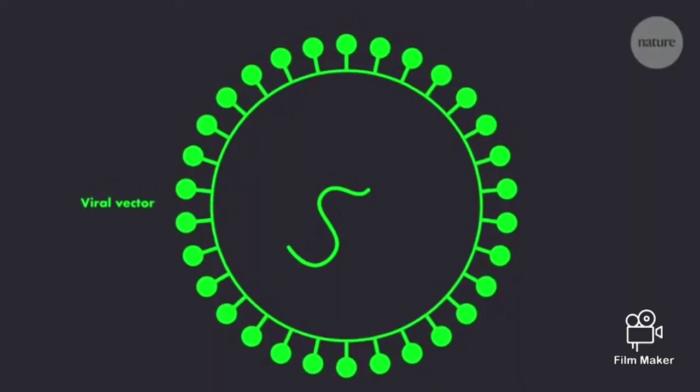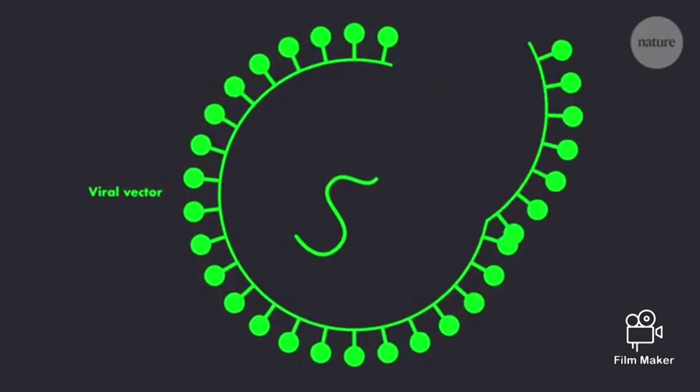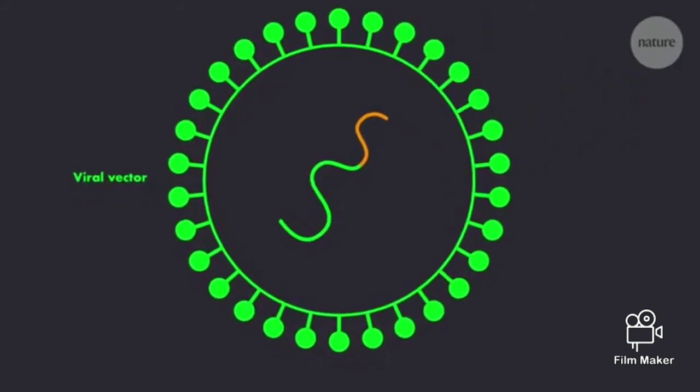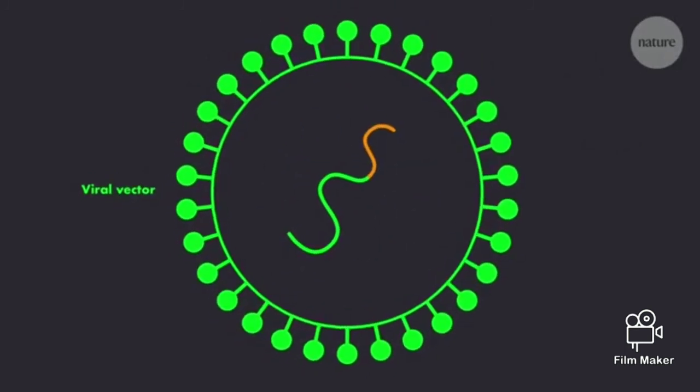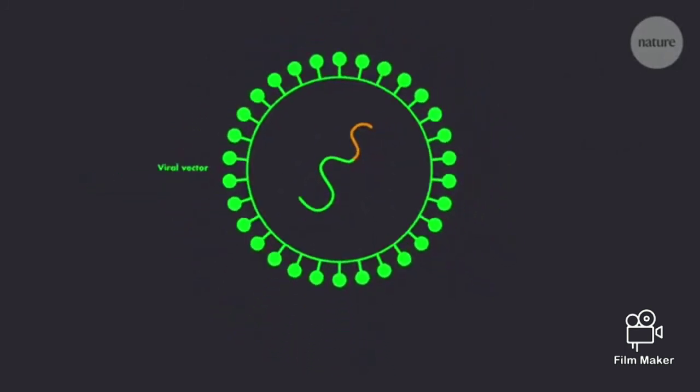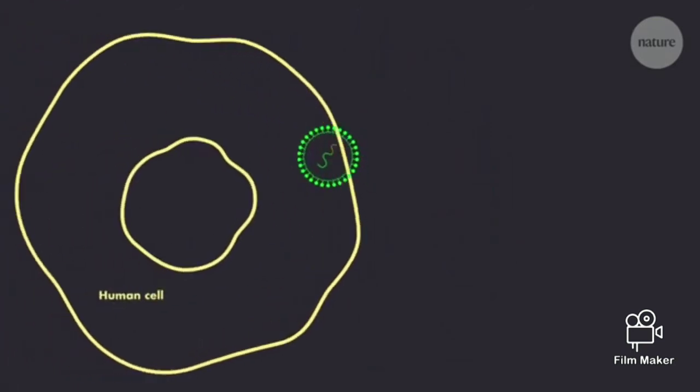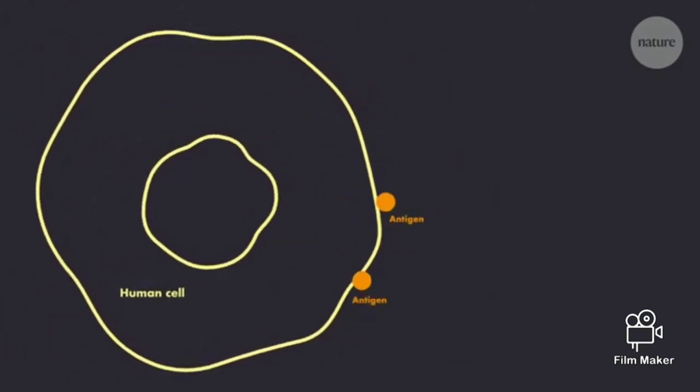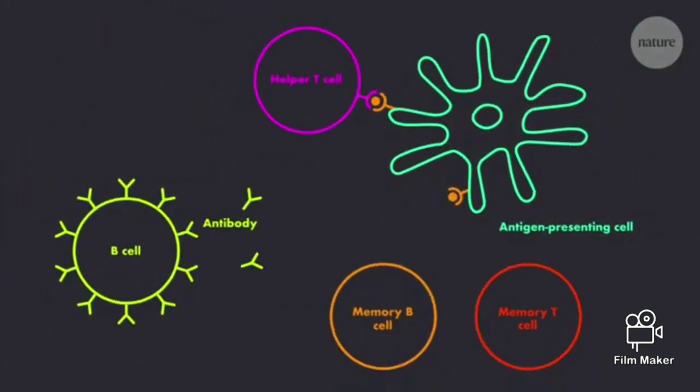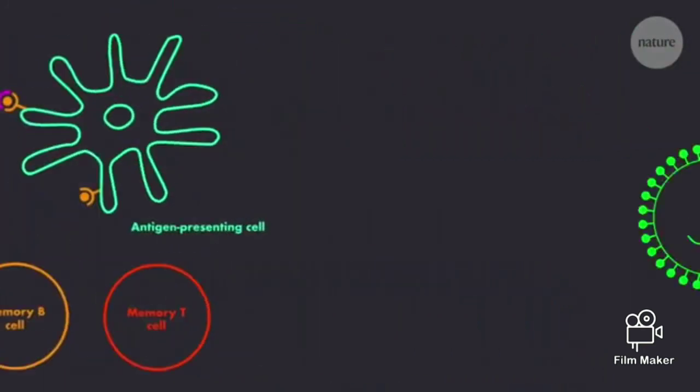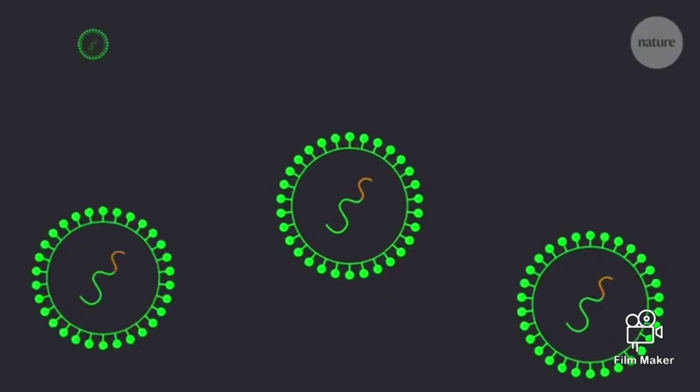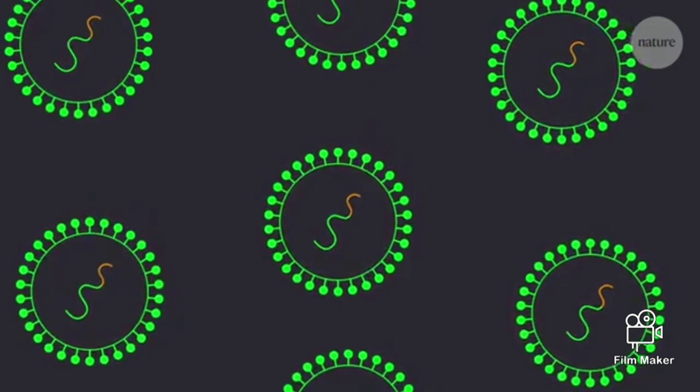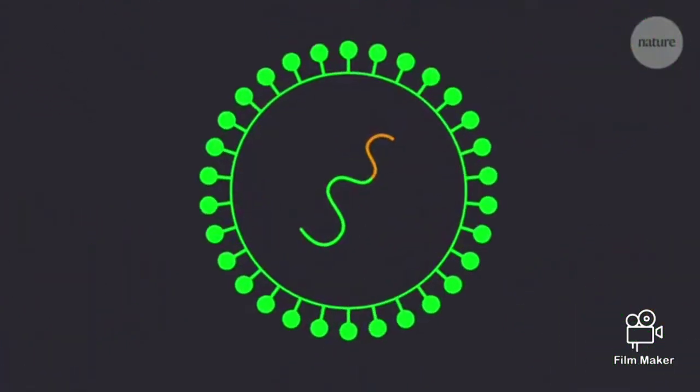Another approach is called a viral vector. Viral vector vaccines work by inserting an incomplete segment of genetic material from a pathogen inside a harmless virus that doesn't cause disease. This then acts as a vehicle for the genetic material, delivering it to the right place in the body where it can be translated into proteins, triggering the immune system. The viral vector may even be self-replicating, increasing the amount of vaccine in the body.